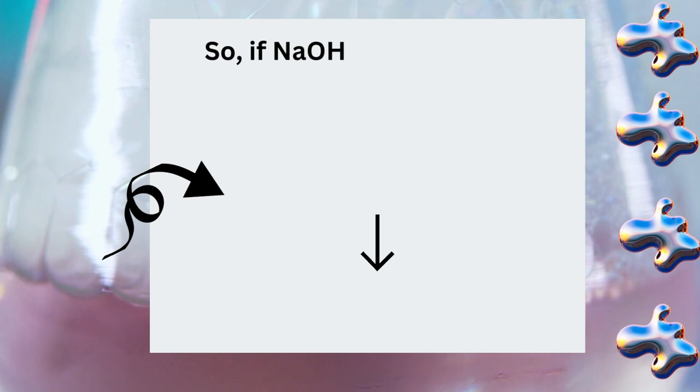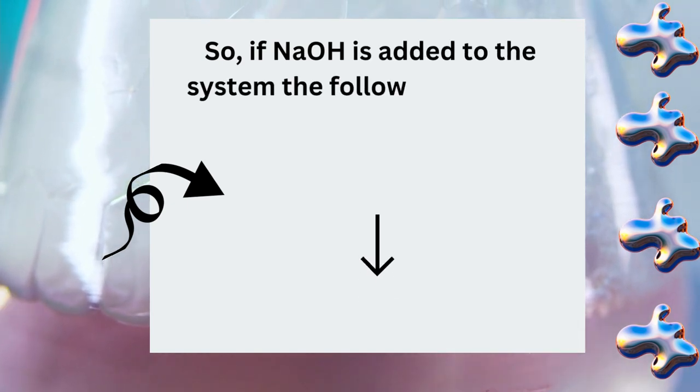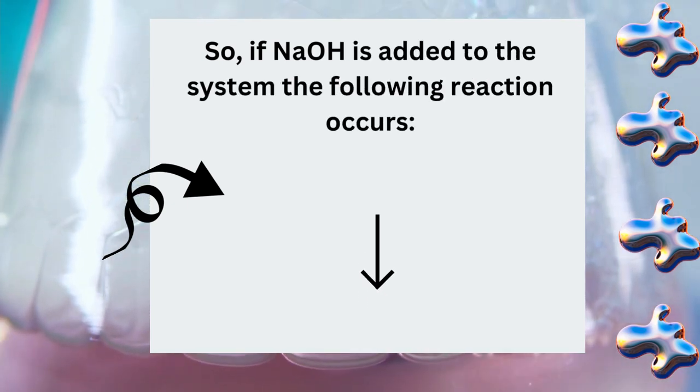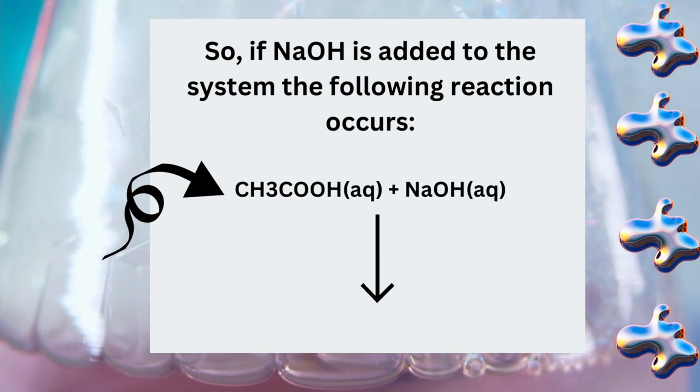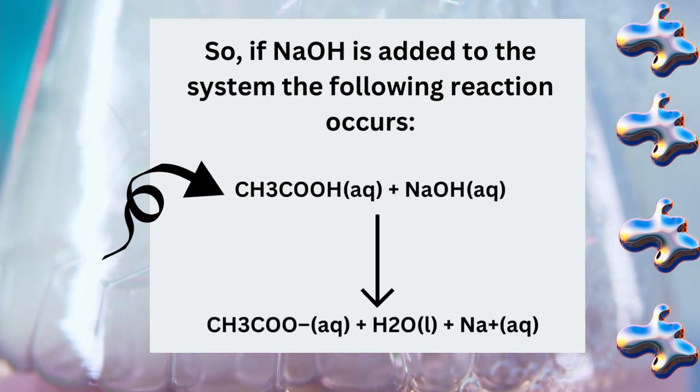So if NaOH is added to the system, the following reaction occurs: CH3COOH plus NaOH gives CH3COO- ion plus H2O plus sodium ion.